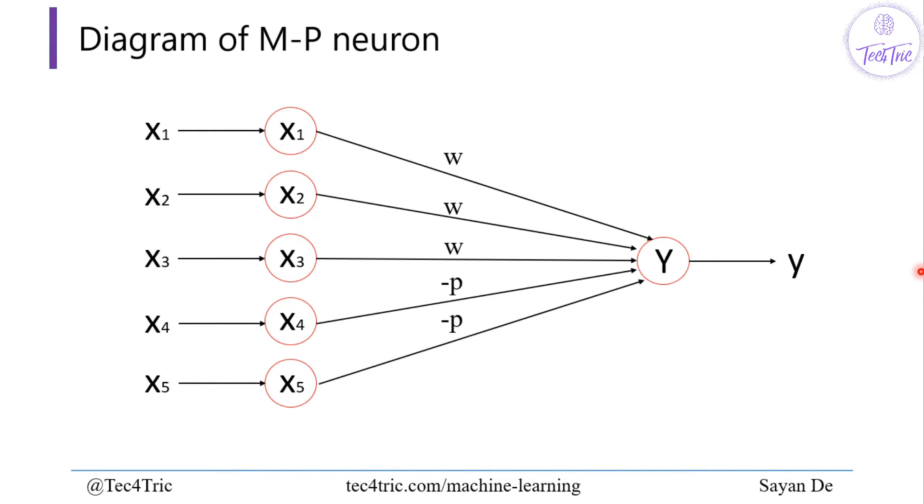This is the basic concept of MP Neuron. We'll see some examples like how to build an AND function using McCulloch-Pitts Neuron and other logic functions.